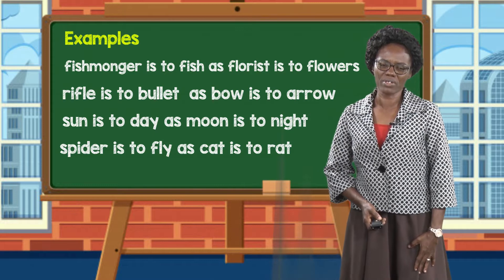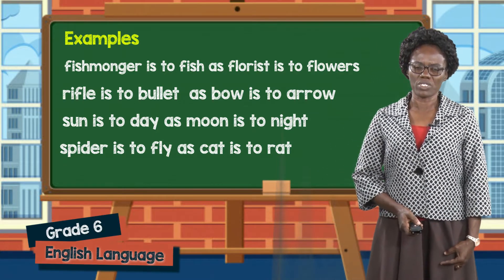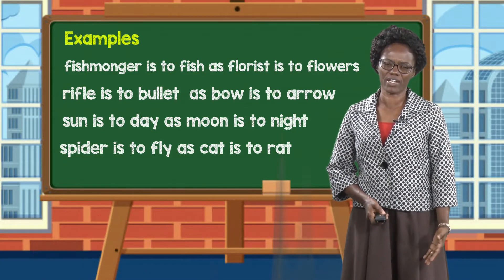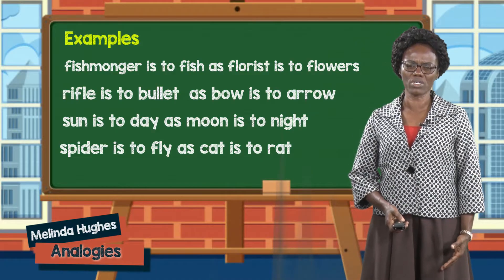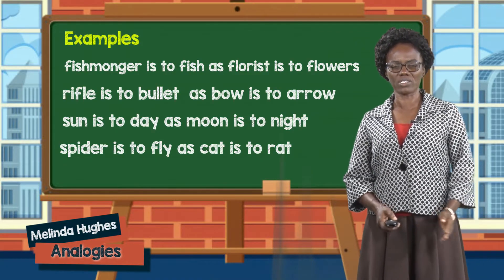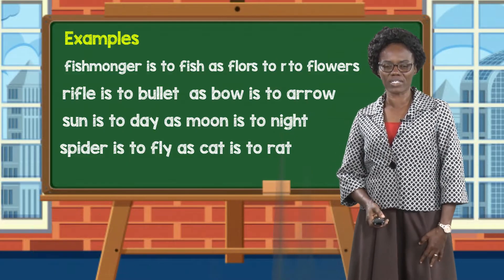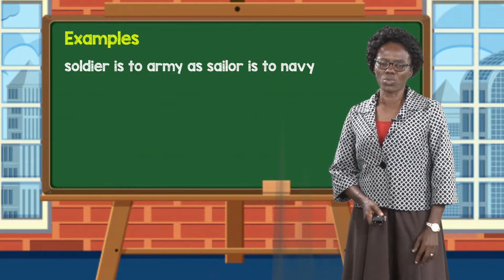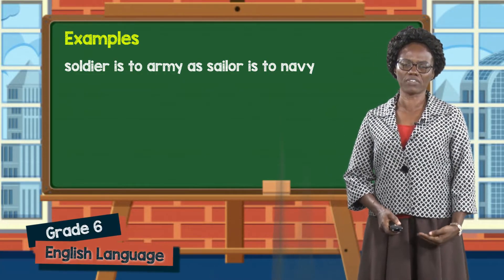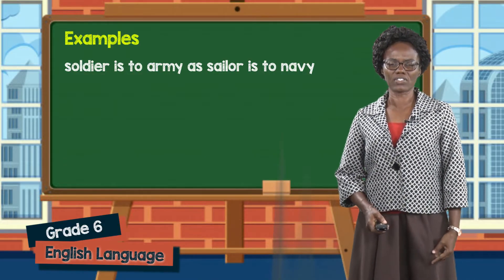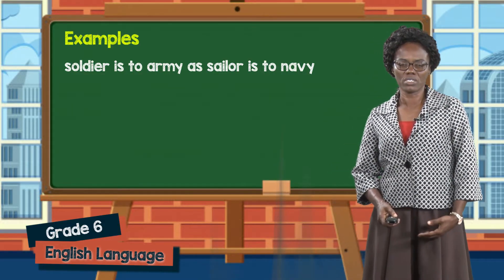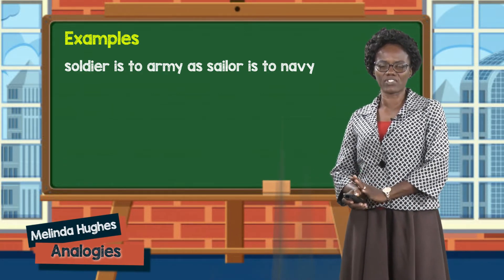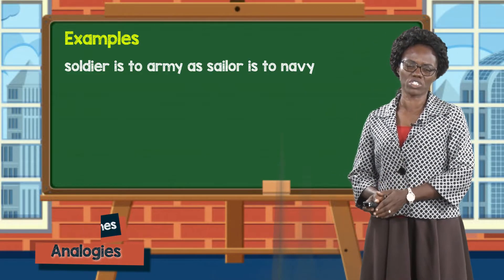If we pause there, we will see the relationship between certain animals. For example, the spider eats flies, so there is a relationship between the animal and what it eats. And we have cat is to rat. Soldier is to army, sailor is to navy. In that pair, we have the collective noun showing the relationship between the soldier and the group he belongs to, and the sailor to his collective name, which is navy.